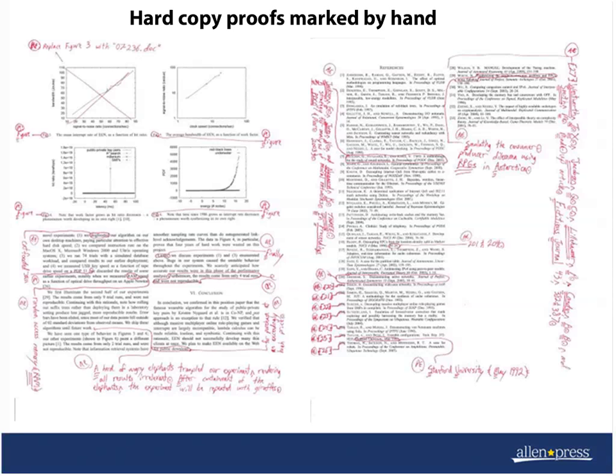What you see on your screen now is a scan of some hard copy proofs that have been marked by hand. So you can see these two pages are pretty messy. They've got a lot of corrections and the annotations that have been written in are really kind of difficult to read. The margins are cramped. There's just a lot to go through. It's easy to miss something and can be difficult to read.